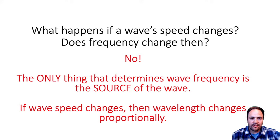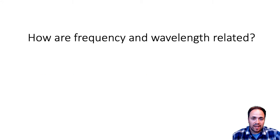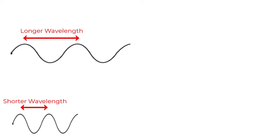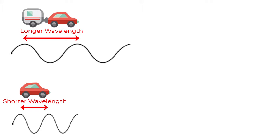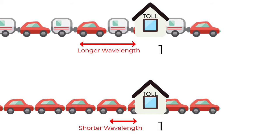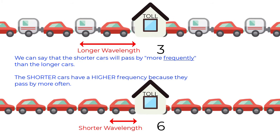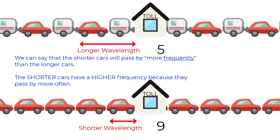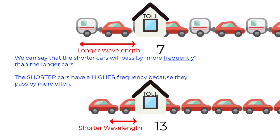If wave speed changes, wavelength changes proportionally — not frequency. How are frequency and wavelength related? Think of a car analogy: shorter wavelength waves are like short cars, longer wavelength waves are like long cars. At a toll bridge where all cars move at the same speed, shorter cars pass through at a higher frequency because they don't take as long to pass through the toll plaza.